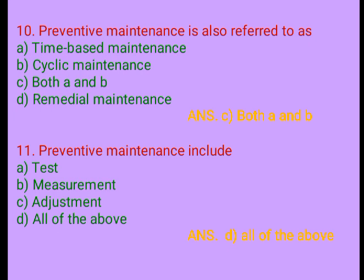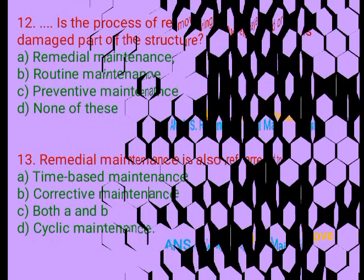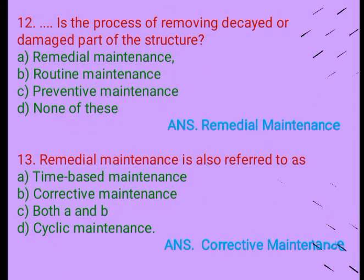Question 11. Preventive maintenance includes: A. Tests, B. Measurement, C. Adjustment, D. All of the above. Answer: D. All of the above. Question 12. Remedial maintenance is the process of removing decayed or damaged parts of a structure. A. Remedial maintenance, B. Routine maintenance, C. Preventive maintenance, D. None of these. Answer: A. Remedial maintenance.